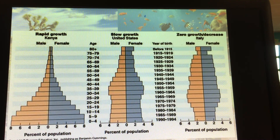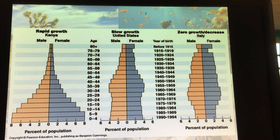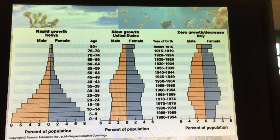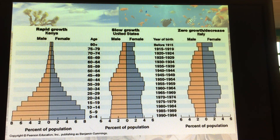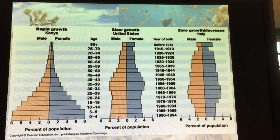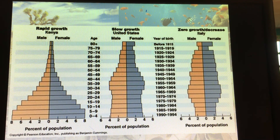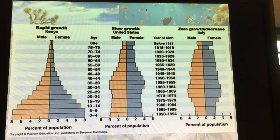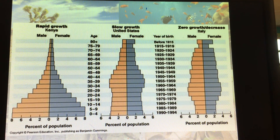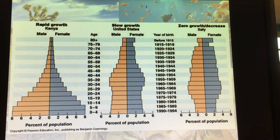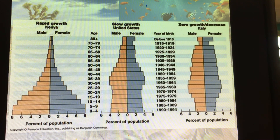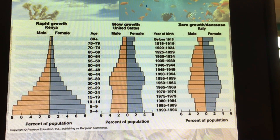We can look at three different examples of countries with different rates of growth. In Kenya, a large amount of the population is young, in the pre-reproductive years, while the post-reproductive years are very narrow. This tells us two things: Kenya is experiencing rapid growth, and if all those children were to survive, they'd have a very large population quickly. The narrow top also suggests a shorter life expectancy, possibly due to poor nutrition, disease, or lack of medical care. The United States has a base just a little wider than the top, indicating slow growth. In Italy and most of Europe, there's essentially zero population growth — when the base is the same width as the top, births are pretty much equaling deaths.